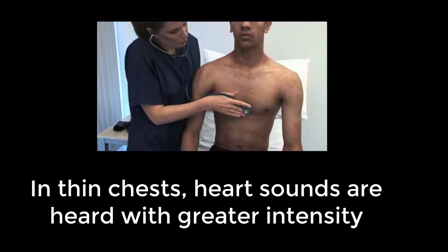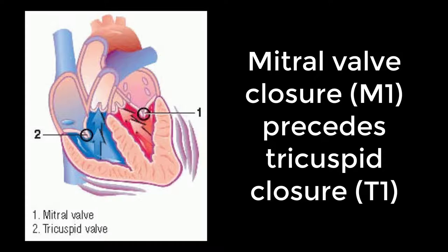The first heart sound, or S1, occurs as the mitral and tricuspid valves close after blood enters the ventricles, representing the start of systole. When the two ventricles contract and pump out blood into the aorta and pulmonary artery, the mitral and tricuspid valves close to prevent blood flowing back into the atrium. S1 is generated by vibrations created by the closing of these two valves. Mitral valve closure, termed M1, precedes tricuspid valve closure, termed T1, causing a slight split. The M1 sound is much louder than T1 due to higher pressures in the left side of the heart.